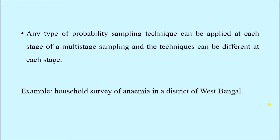The techniques can be different at each stage. Maybe in the first stage we apply simple random sampling, in the second stage we can apply systematic random sampling, and in the third stage we can again apply simple random sampling. We can also use the same sampling technique in different stages if we want, but whatever sampling technique we select, it has to be a probability sampling technique — either simple random sampling, systematic random sampling, or stratified random sampling, etc.